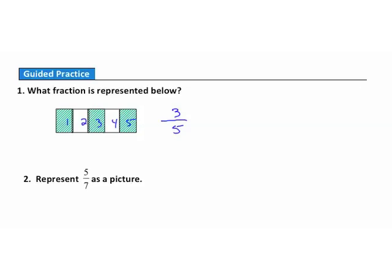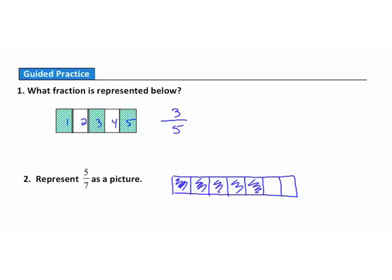Question 2: Represent five-sevenths as a picture. I'll start with a rectangle and divide it into seven equal parts: one, two, three, four, five, six, and seven. That takes care of the denominator of seven. Now I need to shade five of these parts. There is the fraction five-sevenths as a picture.